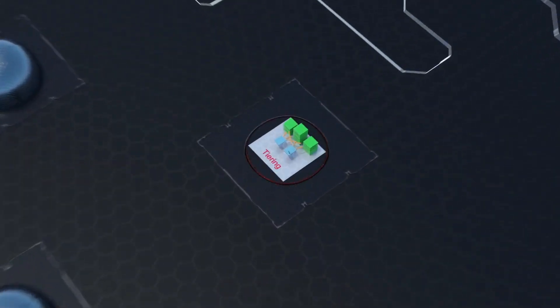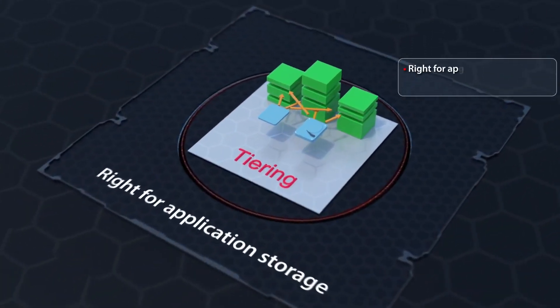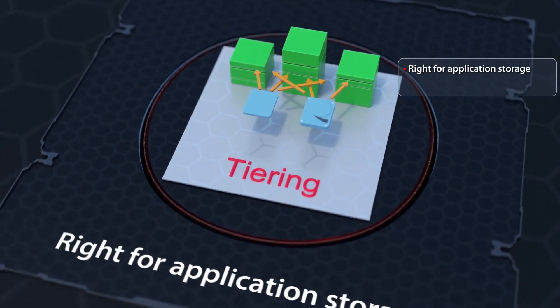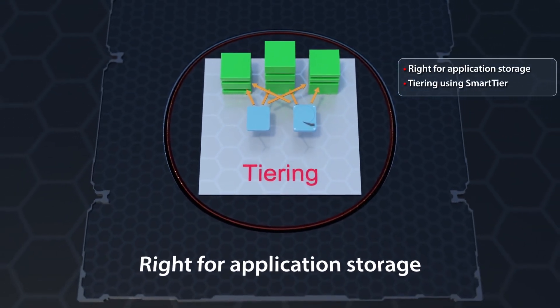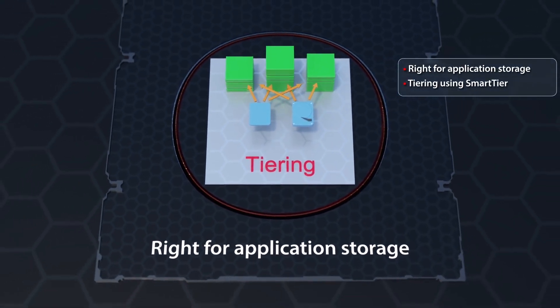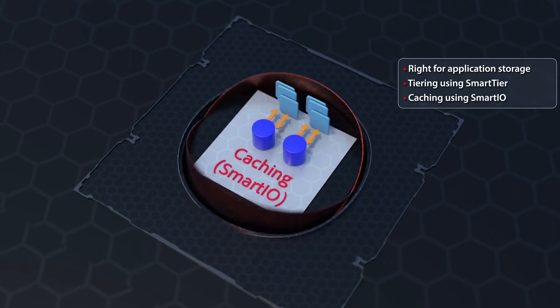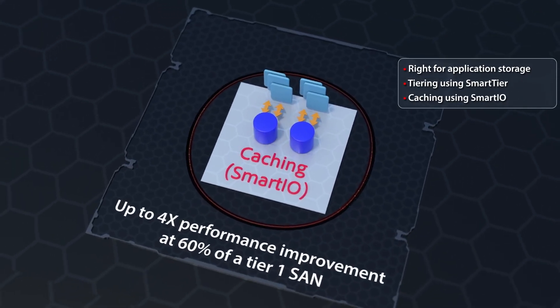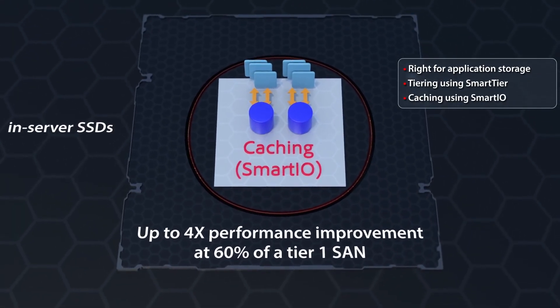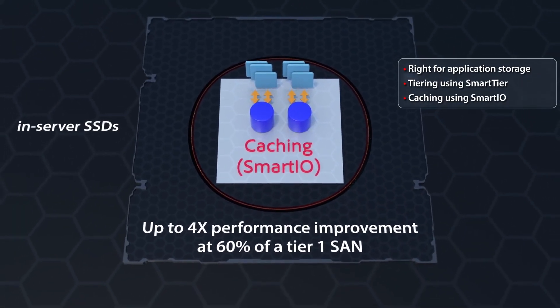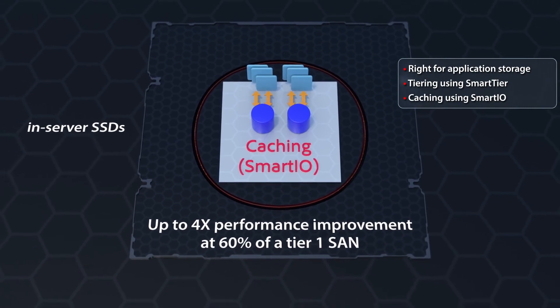InfoScale provides vendor-agnostic storage management and optimization techniques that data centers have come to rely on. Smart I/O caching utilizes in-server SSDs to cache frequently accessed data.